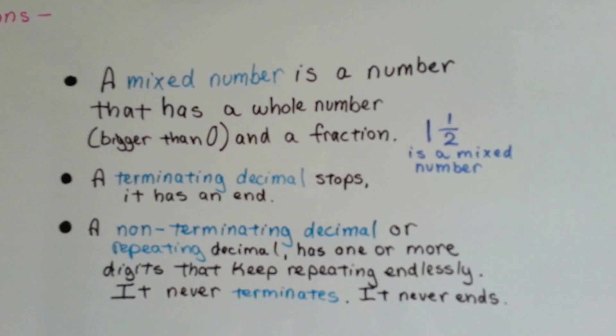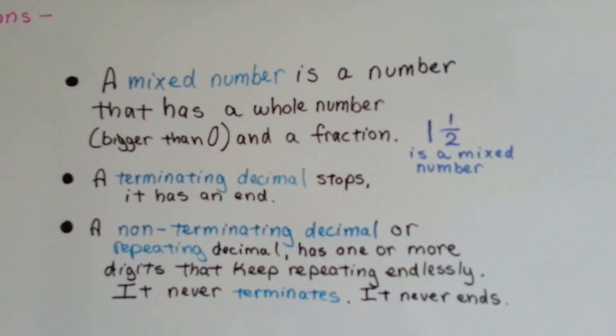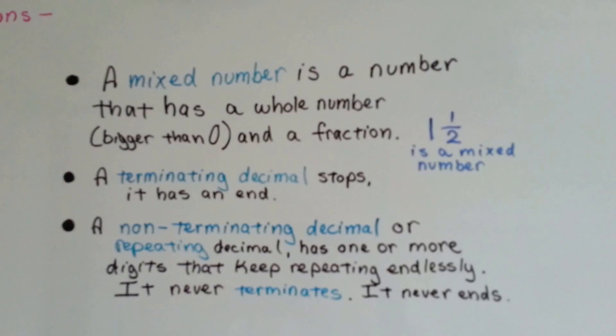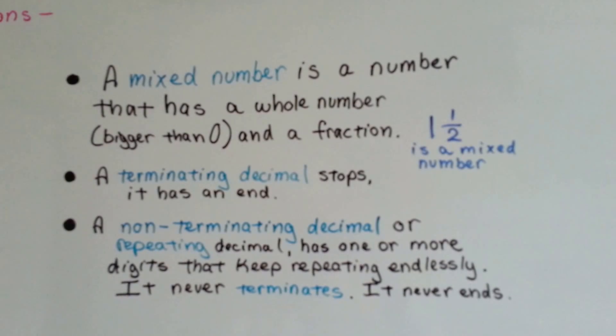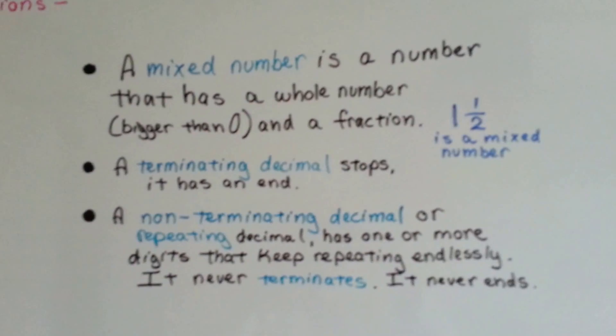A terminating decimal stops. It has an end to it. A non-terminating decimal, or it's called a repeating decimal by the kids in the lower grades, it has one or more digits that keeps repeating endlessly. It never terminates. It never ends.